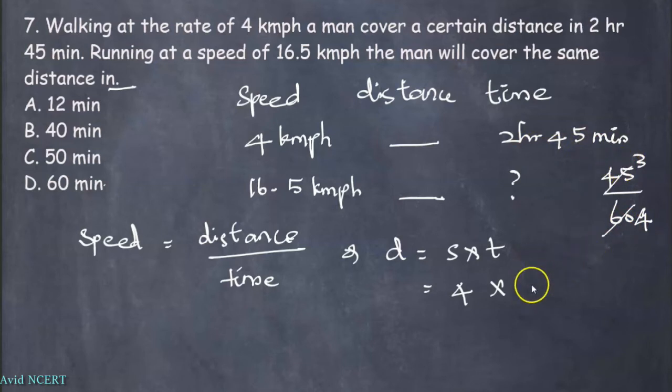45 by 60: 15 times 3 is 45 and 15 times 4 is 60, this is 3 by 4. So this can be converted as 2 and 3 by 4 hours. This can be simplified as 4 times 2 is 8, 8 plus 3 is 11. That is, mixed fraction is converted into improper fraction, so 11 by 4. The 4s cancel, therefore the distance is 11.